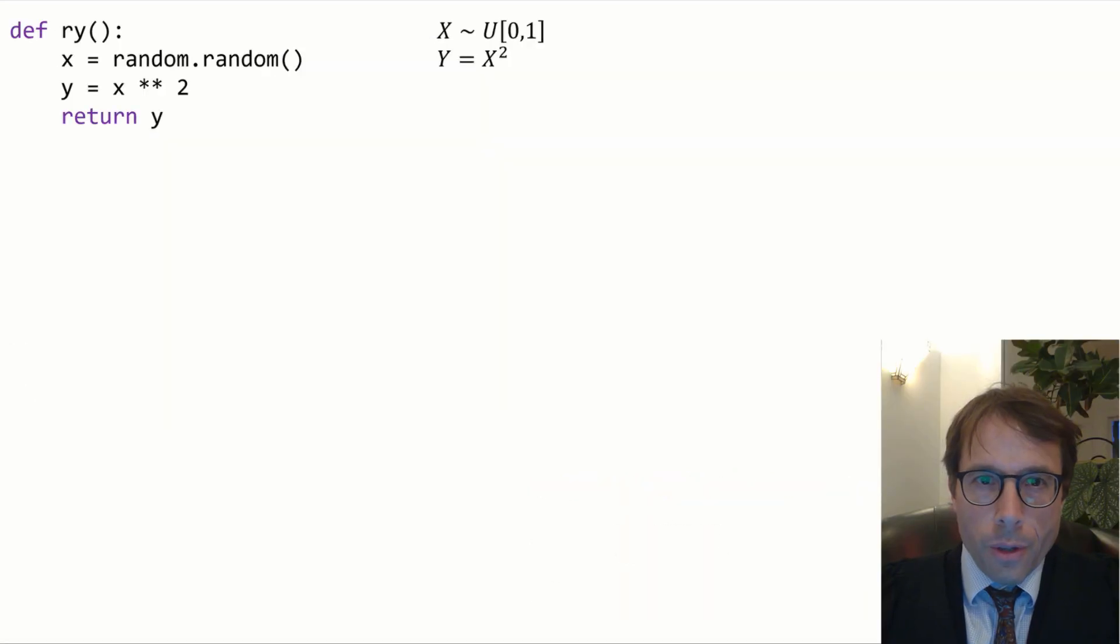First, when you write U, that just means the standard uniform distribution between 0 and 1, all values equally likely. The special symbol twiddles means generate or sample x from the uniform distribution.